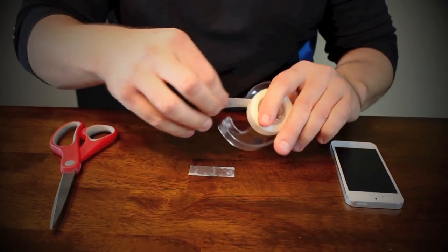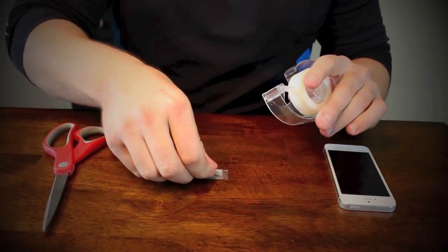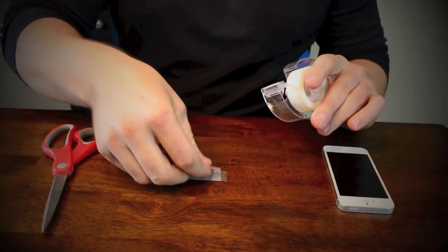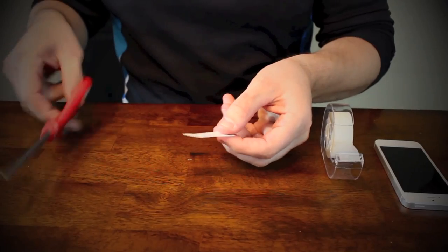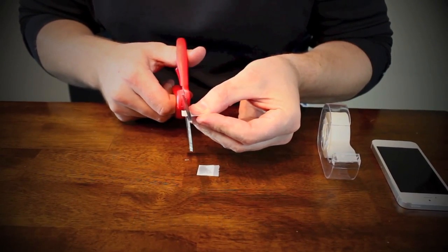Take four pieces of tape, stick them on the table, four layers of tape. Take your scissors and very carefully cut about an eighth of an inch strip.